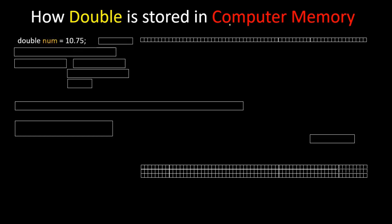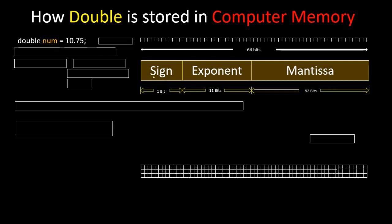Here we have variable double num equals to 10.75. And here we have 64 bits in your computer memory, and we will store it in such a way that's invented by IEEE 754, where we have 1 bit for sign, 11 bits for exponent, and 52 bits for mantissa.